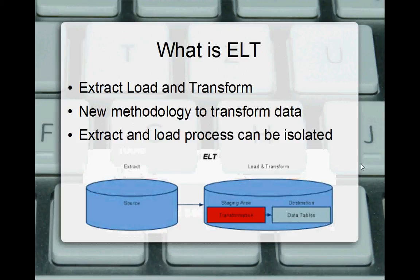To overcome all these weaknesses, the recent approach is called ELT — Extract, Load, and Transform. It is a newer methodology. The extract and load processes can be isolated, so we can extract the data, do the necessary transformation, and then load the data in three distinct stages. If changes come in the future, we can accommodate those changes with minimal impact since the process is isolated. That is one of the key advantages of ELT.